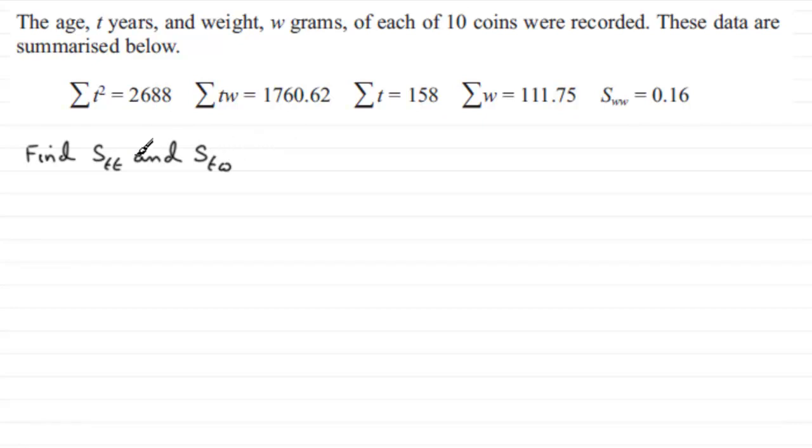Now to do this, you should be familiar with this particular formula. It normally is documented in most formula books. SXY is equal to sigma XY, the sum of XY's, minus sigma X multiplied by sigma Y, all divided by N. And we can adapt this formula.